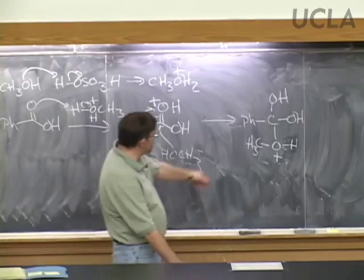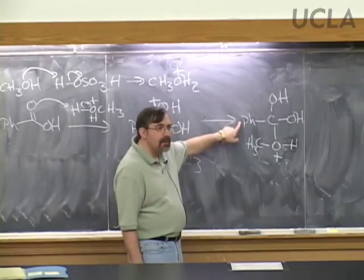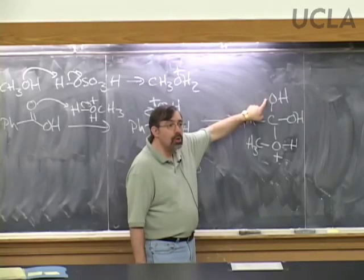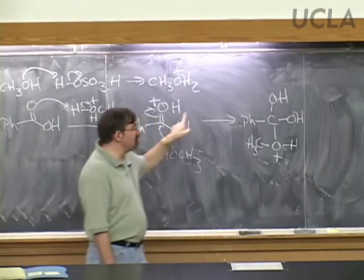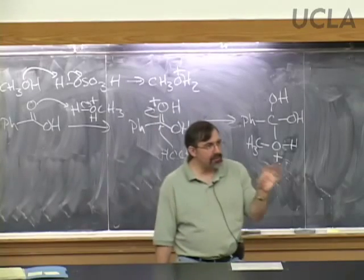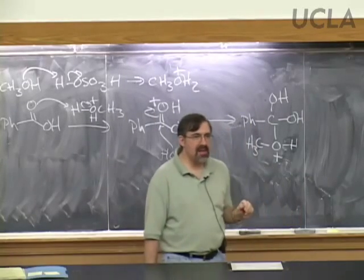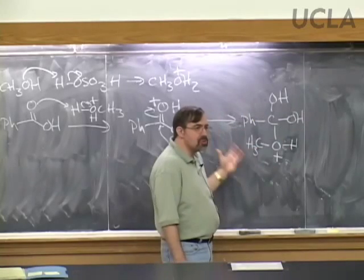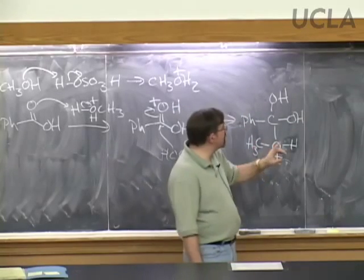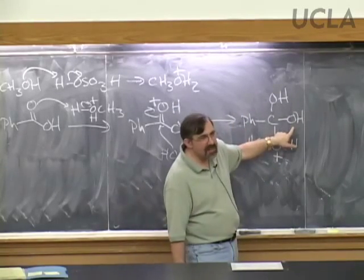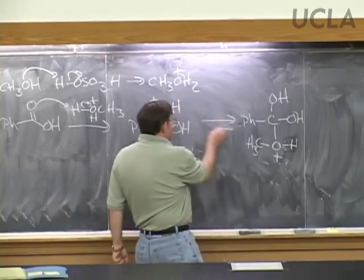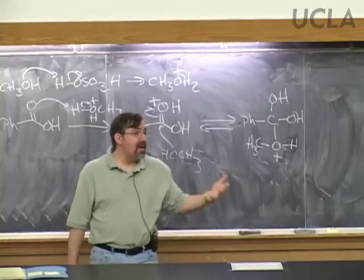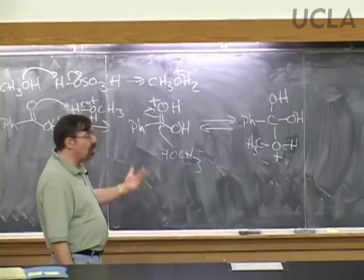What do tetrahedral intermediates like to do? Kick out leaving groups. Let's see what our leaving group choices are. The benzene ring? Never ever. OH minus can't leave—it has to be a negatively charged tetrahedral intermediate to kick out an O minus, and there's no negative charge here. The best leaving group is methanol, so this tends to go backwards. That doesn't mean the mechanism never moves forward; it just means methanol is frequently leaving.